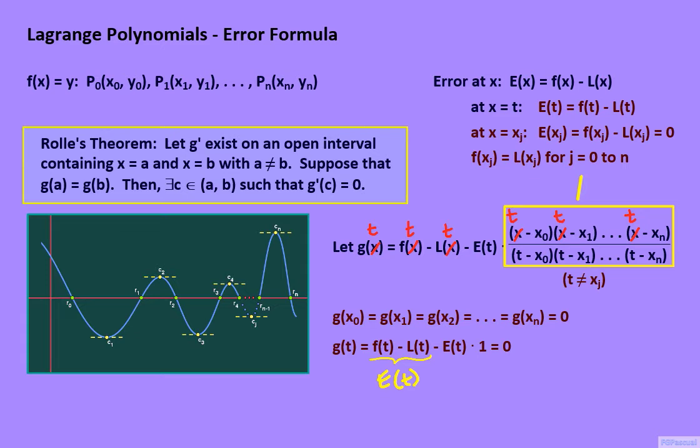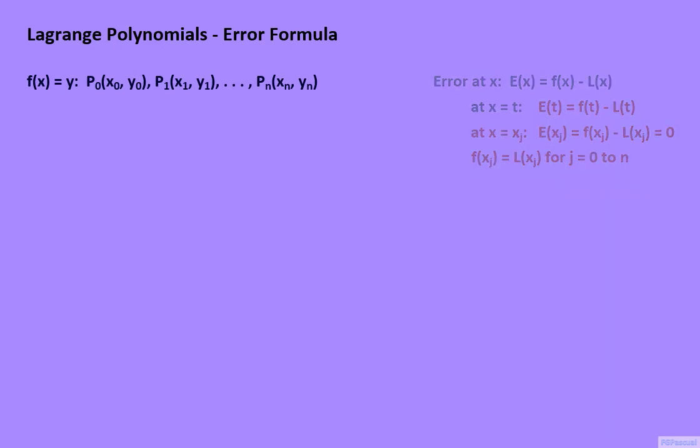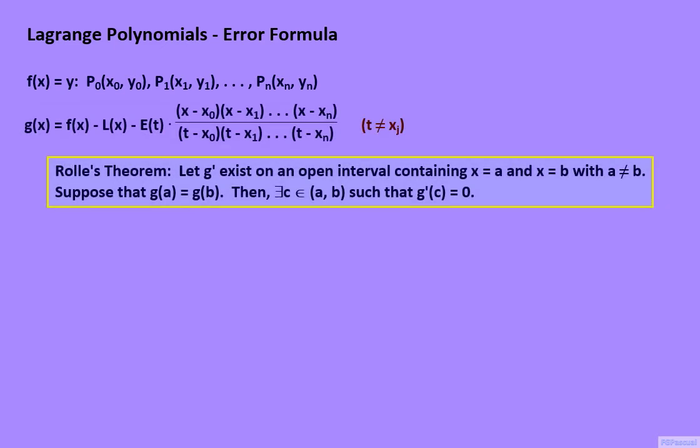This brings the grand total of x-intercepts, or zeros for g, to n+2. Rolle's theorem says that we should be able to find zeros of g' in between the zeros of g, that is in the gaps formed by the zeros of g. But if g has n+2 zeros, as we had found out, then there should be n+1 gaps in between these distinct zeros. Therefore, g' should have at least n+1 distinct zeros.